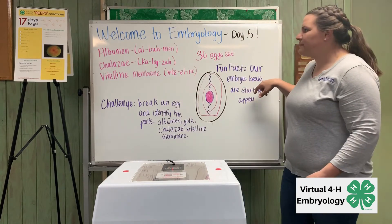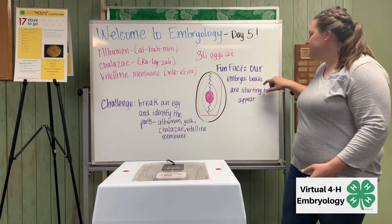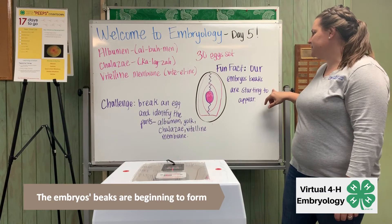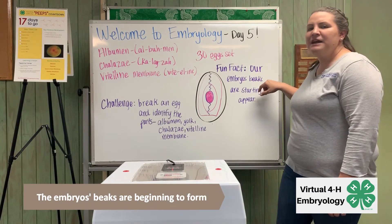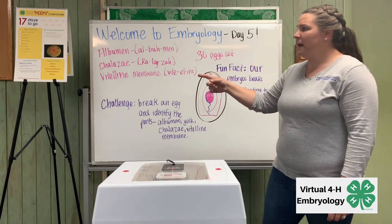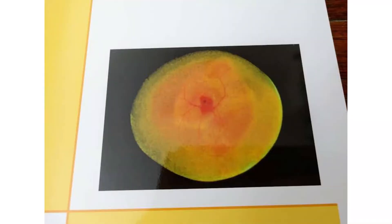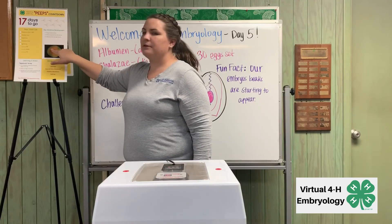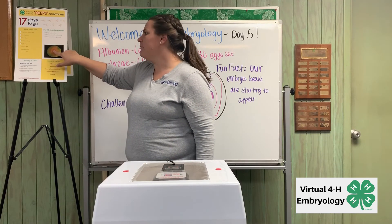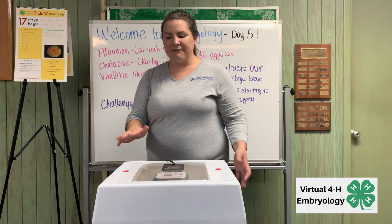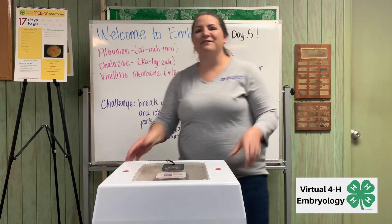Let's talk about a fun fact with our eggs today. These embryos are beginning to have beaks starting to appear. If you look at an up-close version of this developing embryo, you can see there are some blood vessels and a little dark spot where the embryo is really starting to take place and develop. As we get further in this project and closer to candling, there's going to be more and more to look at. See you again for day six.